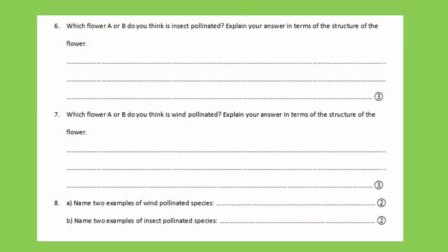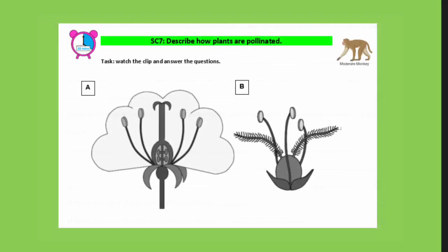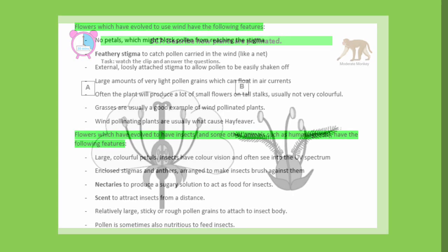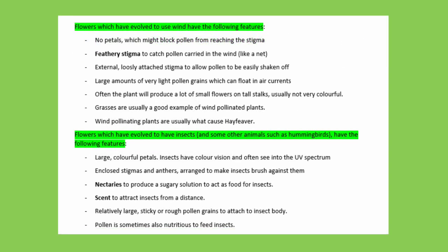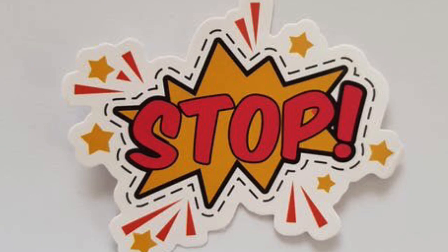You're now going to do questions six, seven, and eight. Six and seven are thinking questions, and eight is going to require you to do some research on the internet, but it's very easy research. Make sure you look at the actual diagrams you're meant to be comparing. If you get really stuck on the thinking part, the answers can be found in the summary notes at the back of the booklet. Pause here and do your best to answer these questions.